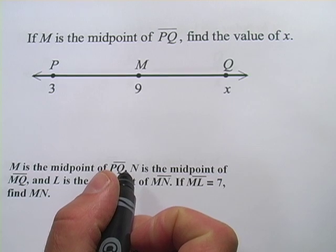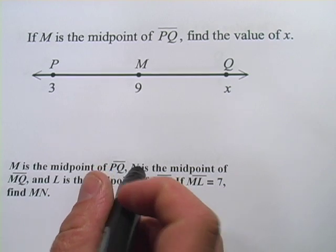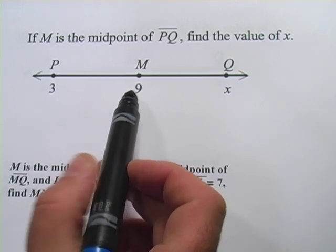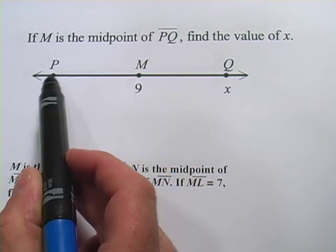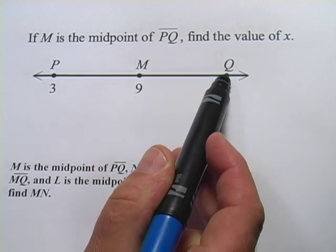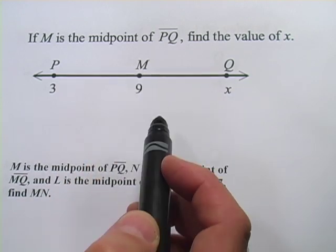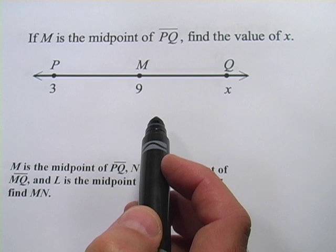In these problems, we're dealing with midpoints of line segments. And the basic rule to remember, if something is a midpoint, then it's an equal distance from one end to the midpoint as it is from the other end to the midpoint. That's the rule of thumb you're going to be applying here.